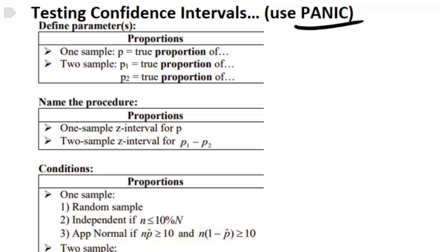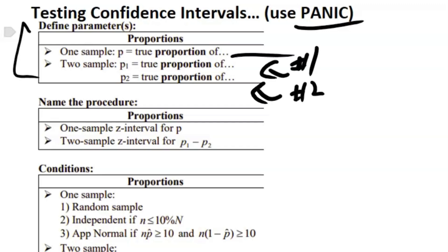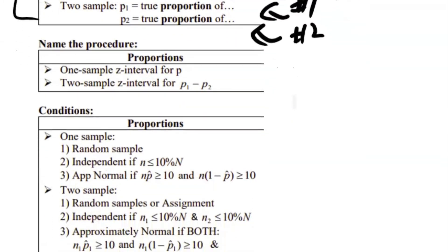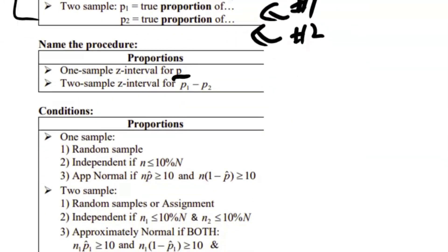The acronym you need to know is PANIC: Parameter of interest, Assumptions and conditions, Name of the test, state the Interval, and Conclude. For the parameter, you state what you're doing the interval about. For a one-sample it's just the true proportion of whatever. For two samples, state the true proportion of each — number one and number two. For procedure: one-sample uses a z-interval for p; two-sample uses p1 minus p2.